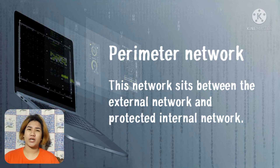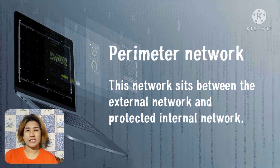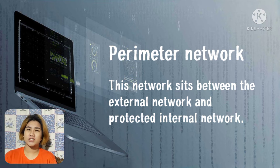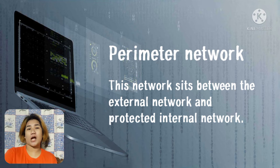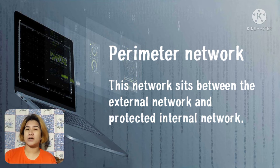The perimeter network sits between the external network and the protected internal network. It shields systems from attackers by adding an additional layer of security between the two networks. If attackers break into the bastion host of the perimeter network, they can only snoop on traffic on that network.